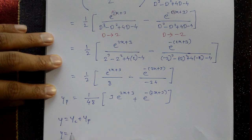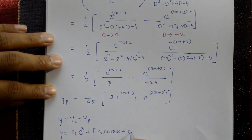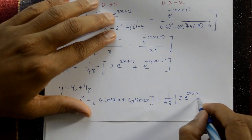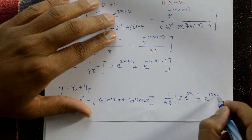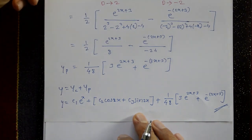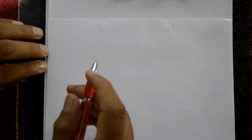The complete solution is y = yc + yp: y = c₁e^x + c₂cos(2x) + c₃sin(2x) + (1/48)[3·e^(2x+3) + e^(-(2x+3))]. This is the required solution.